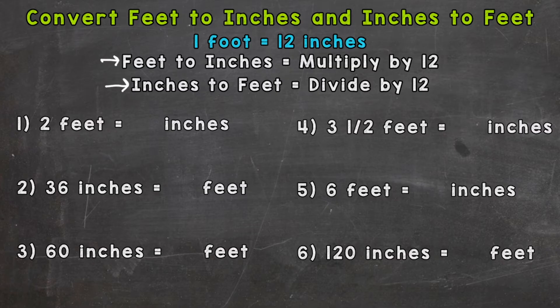So number one we have two feet equals how many inches. Well let's think of it like this. A ruler is one foot but we have two of those rulers. One ruler has 12 inches. Two rulers would be 12 plus another 12 or 2 times 12. So again we're going feet to inches so it's multiply by 12. And 2 times 12 is 24, again two groups of 12 inches gives us a total of 24 inches.